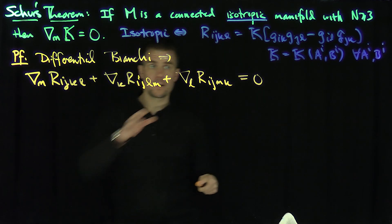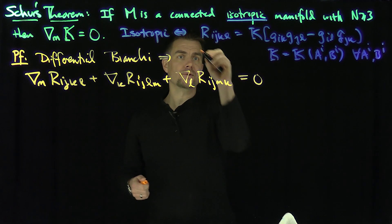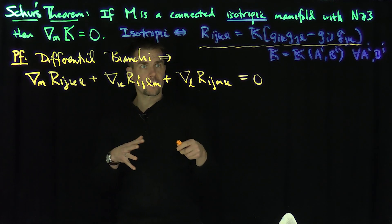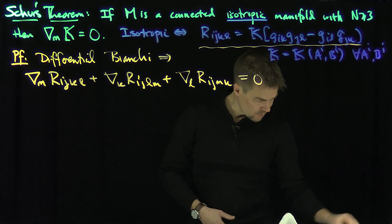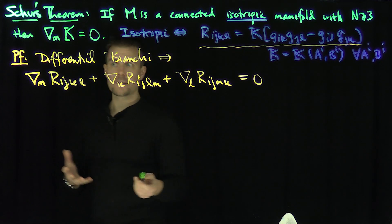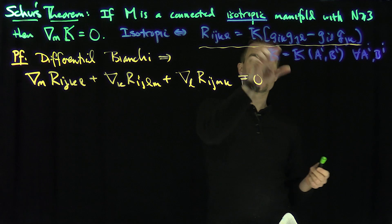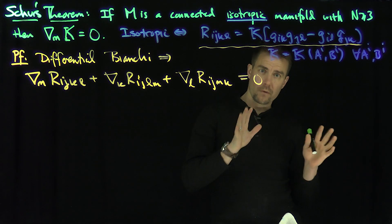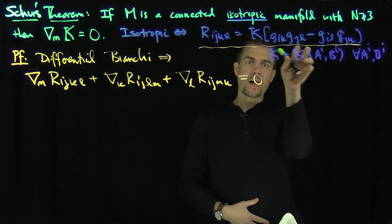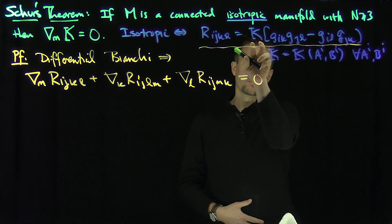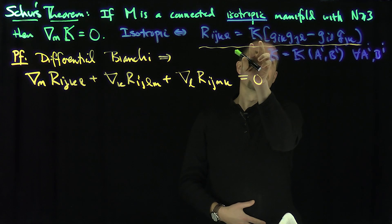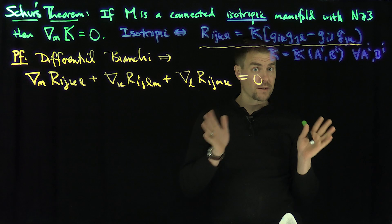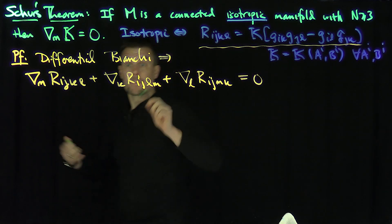So let's apply this differential Bianchi identity to both sides of the isotropic equation. I take the isotropic equation and differentiate it with respect to m, k, and l. Of course I'm going to use the fact that the covariant derivative of the metric tensor is equal to zero. So when putting derivatives on these metric tensors, the covariant derivatives of those are zero — there are product rules, but the covariant derivative of the metric is always zero.